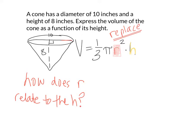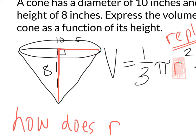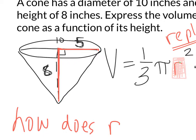In this case we have a right triangle. The radius and the height form a right triangle. The maximum radius is 5, since the diameter is 10, and the maximum height is 8.